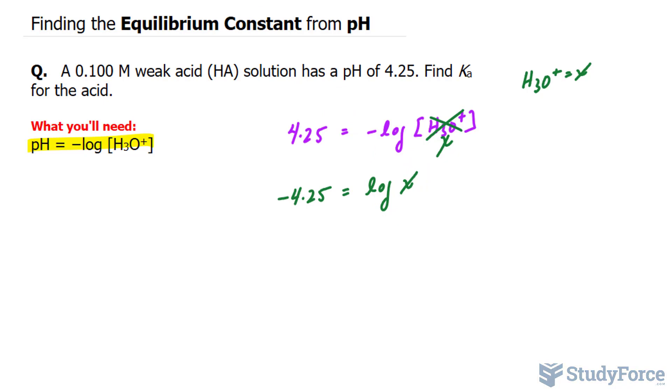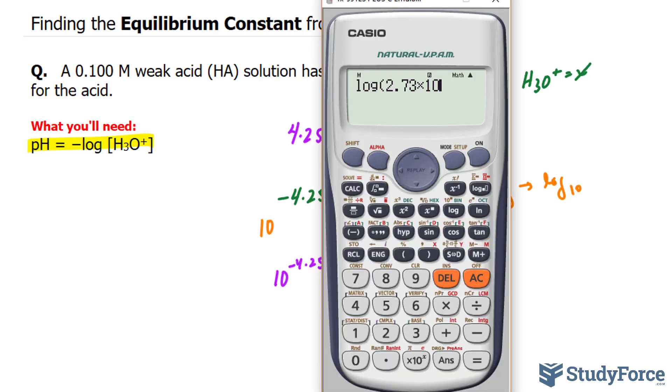Now to isolate for X, I need to raise both sides of this equation as powers to the base 10. The reason I'm using base 10 is because log is a common log, meaning log of base 10. So by raising them as powers, this 10 and this log cancel out, leaving you with 10 raised to the power of negative 4.25 equals X. Let's use our calculator.